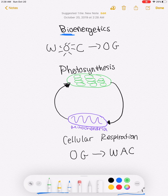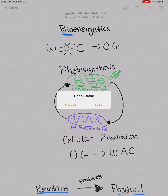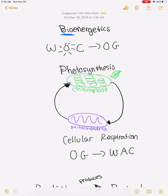Photosynthesis occurs in the chloroplast, and this is something that plants do. Cellular respiration occurs in the mitochondria, and cellular respiration is done by plants but also by animals.